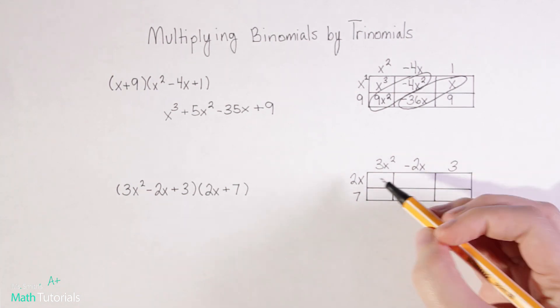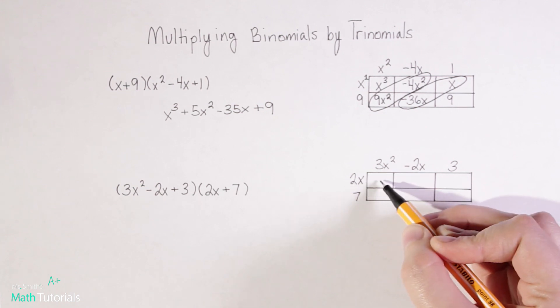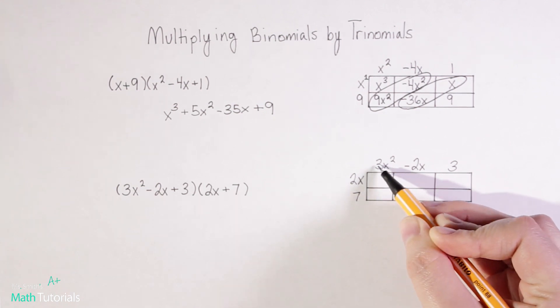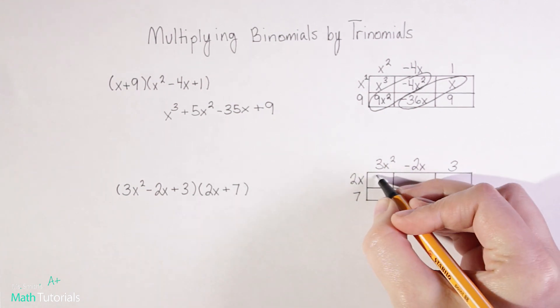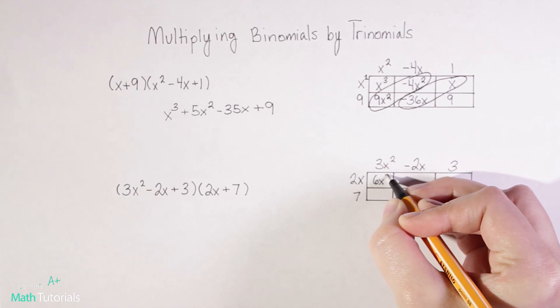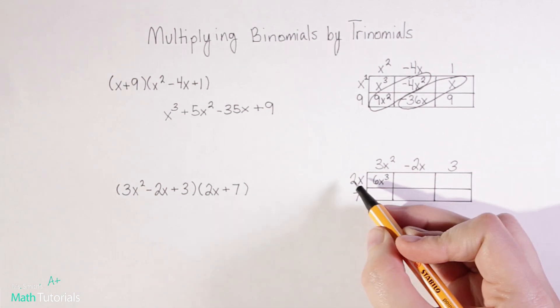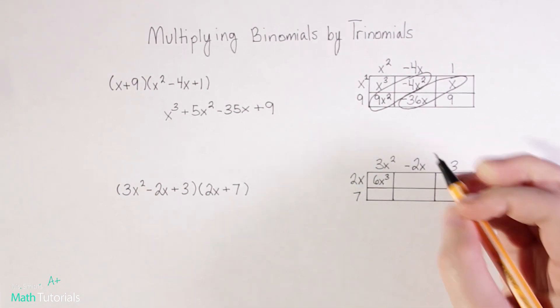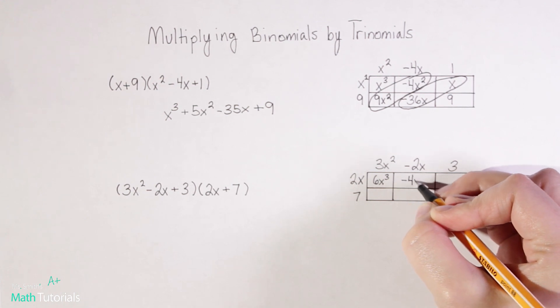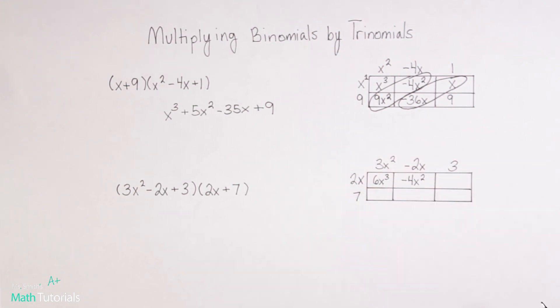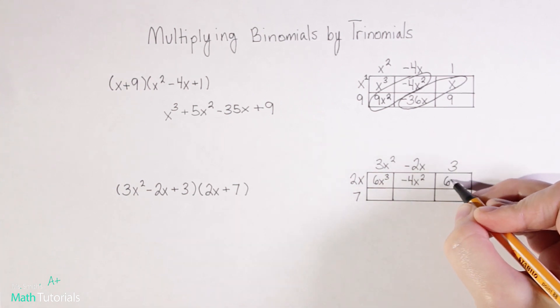So we're going to combine through multiplication. So 2x times 3x squared is going to give me 6x cubed. 2x times negative 2x will give me negative 4x squared. 2x times 3 will give me 6x.